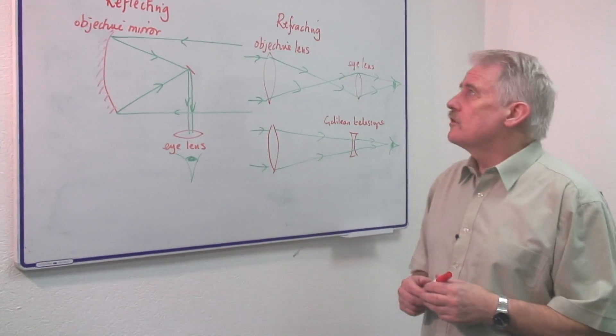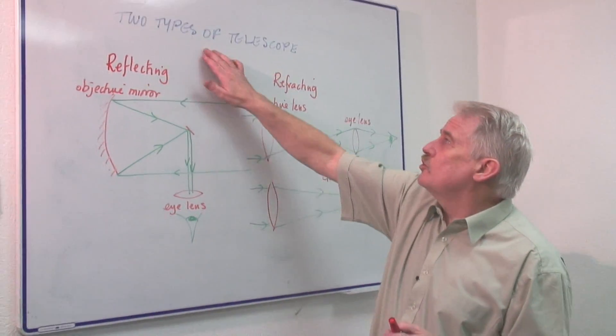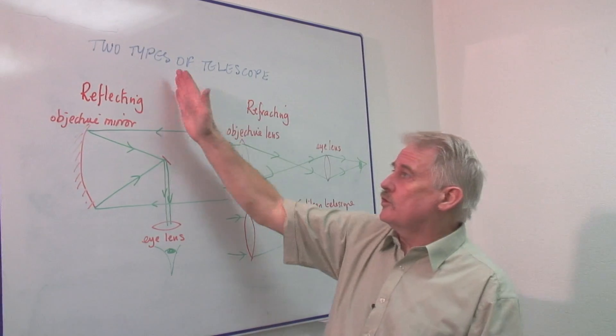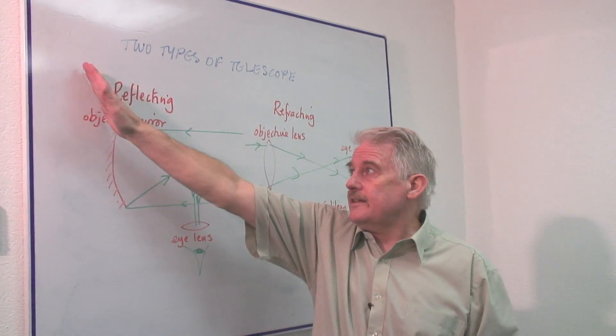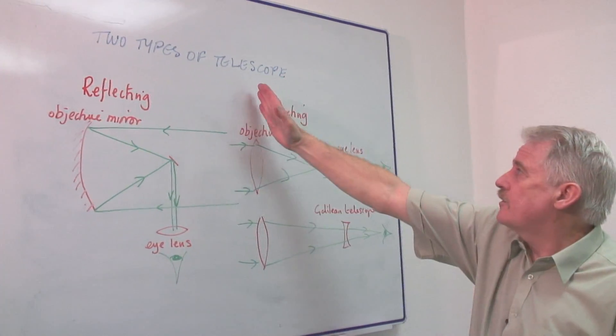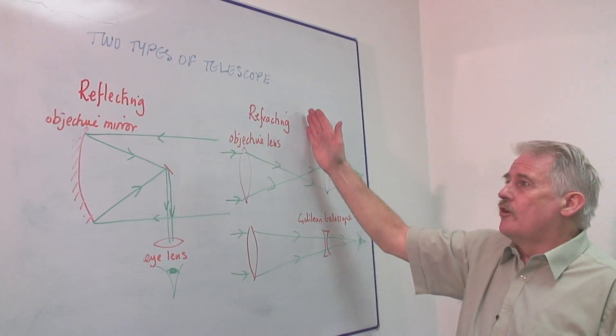Hi, I'm Steve Jones, and I'm going to tell you something about the two basic types of telescope. First of all, you have reflecting telescopes, and you have refracting telescopes.